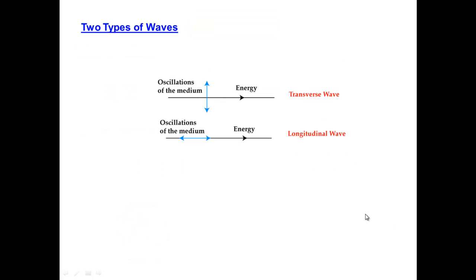From the standpoint of the direction of motion of the medium, we can also make a distinction between two different types of waves. If the medium — as is the case with a wave on a string — is composed of particles that move up and down while the wave itself and its energy move perpendicular to that, we have what's called a transverse wave. Transverse simply means perpendicular. On the other hand, if the oscillations of the particles in the medium are horizontal, along the same direction as the motion of the wave itself — as in a sound wave — then we have a longitudinal wave.